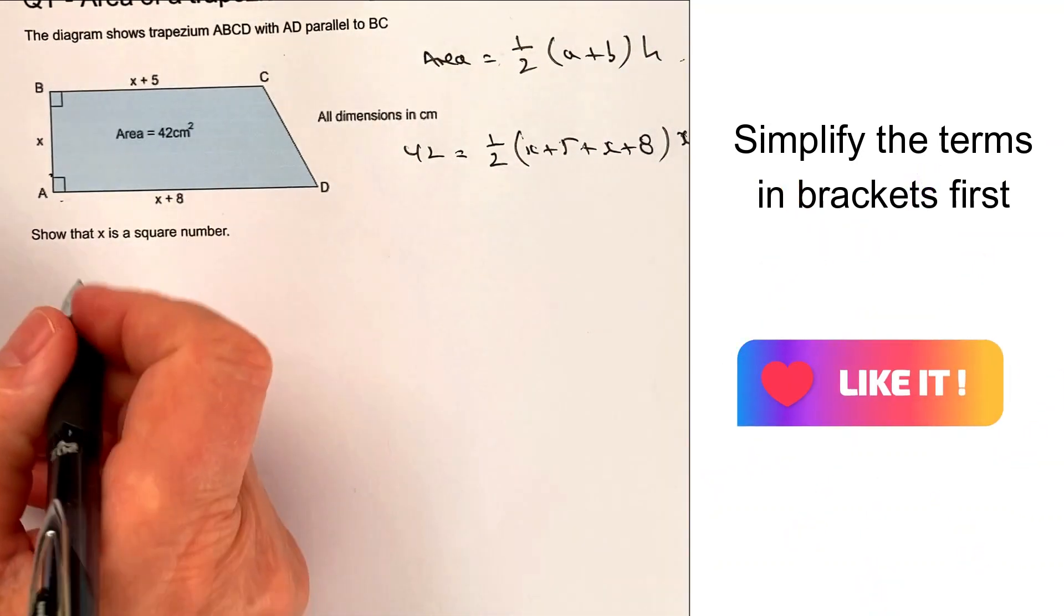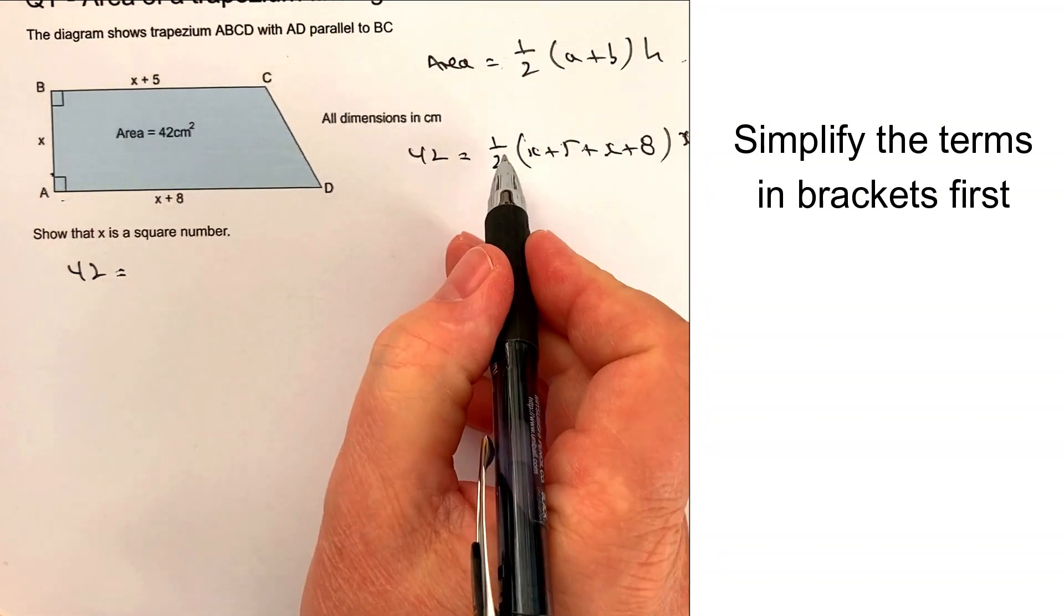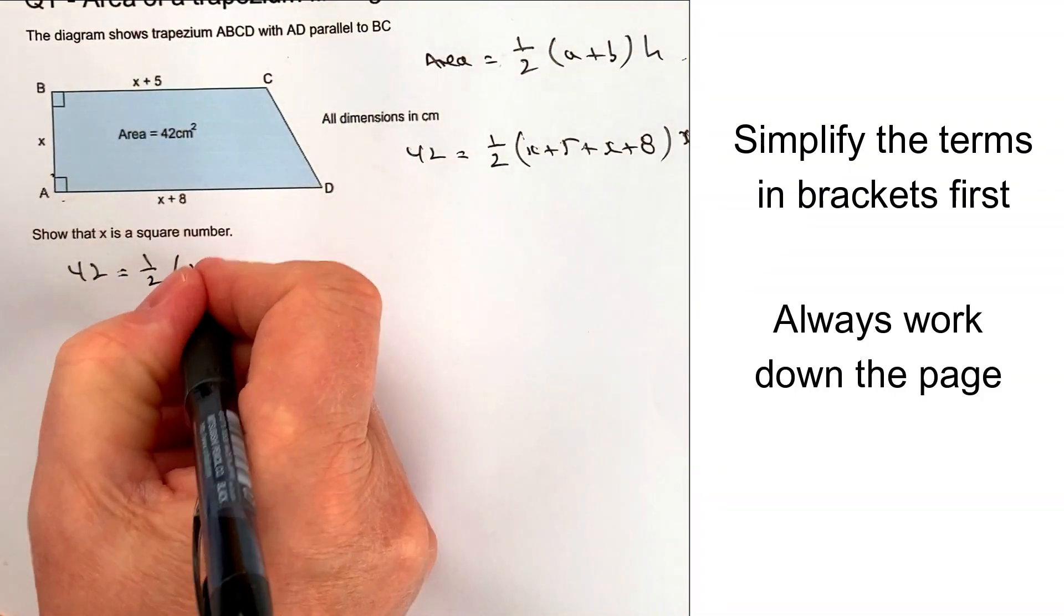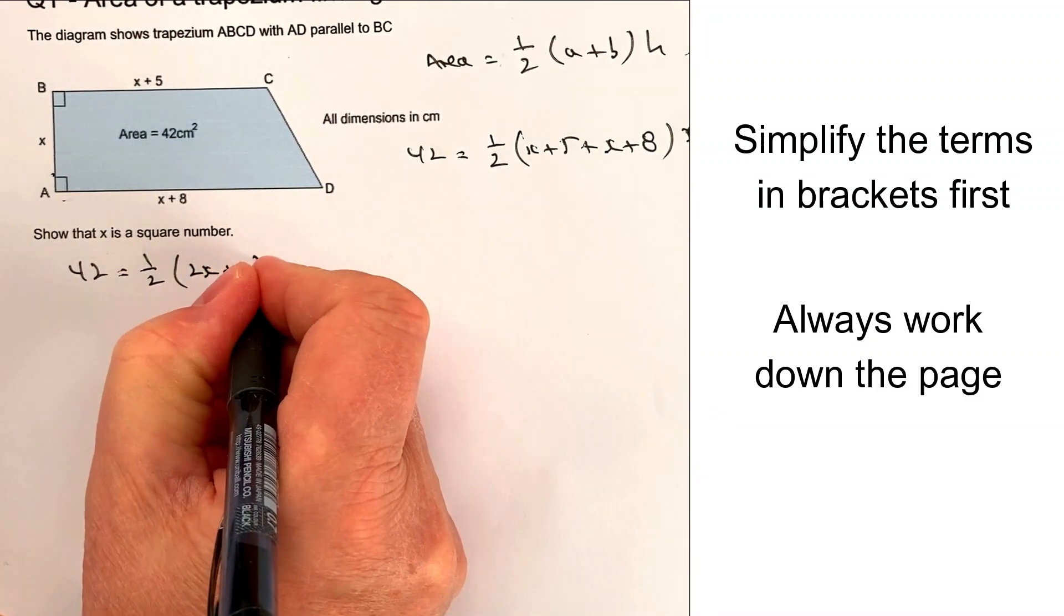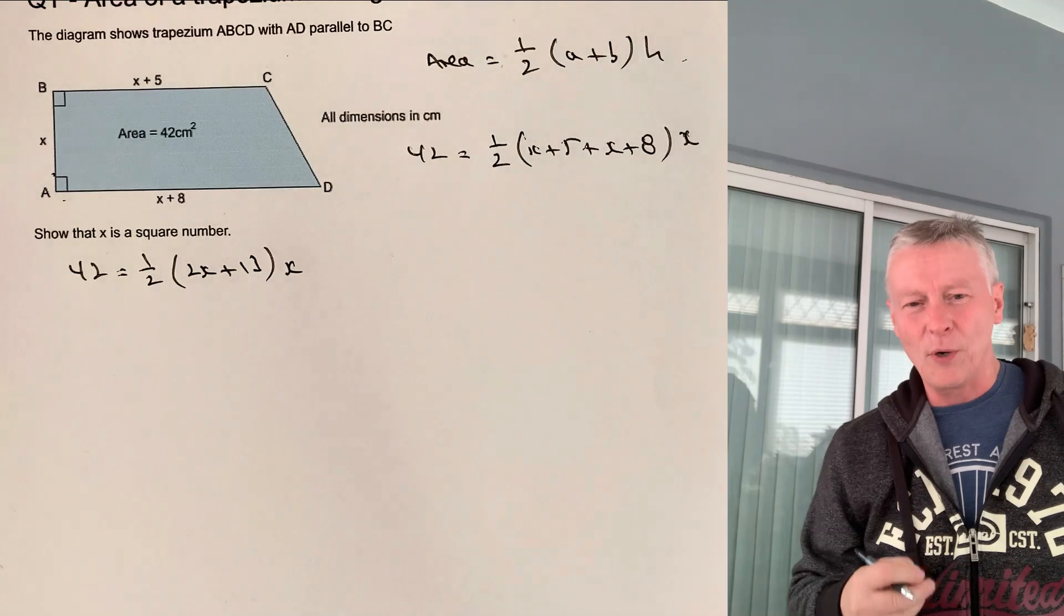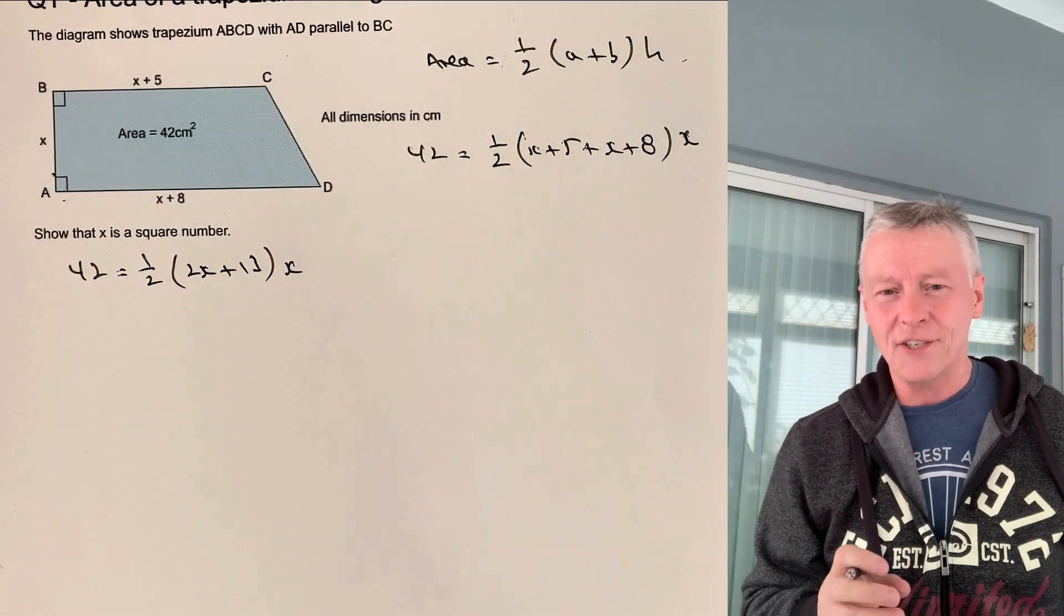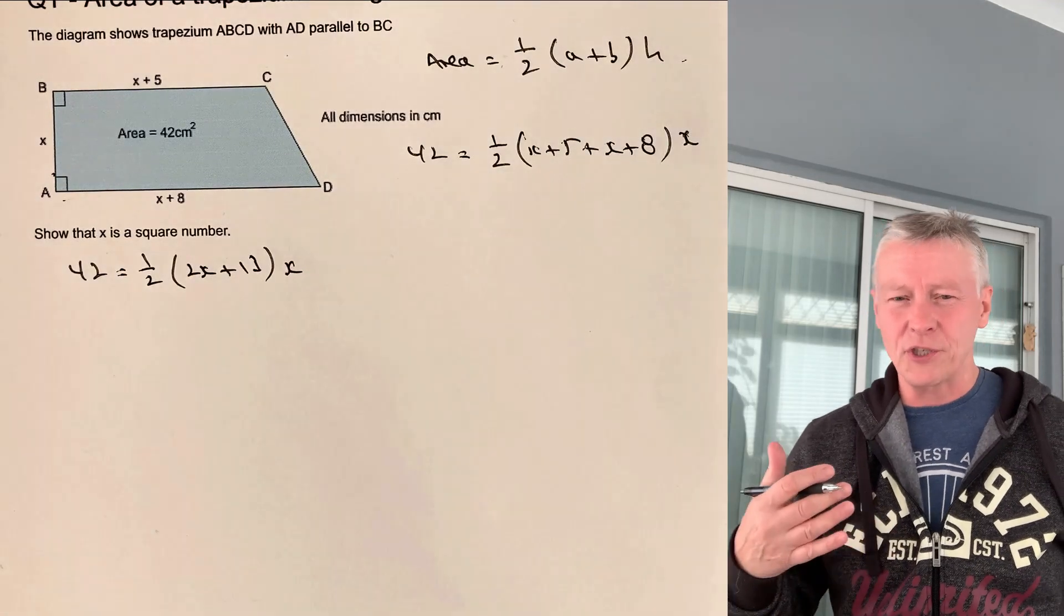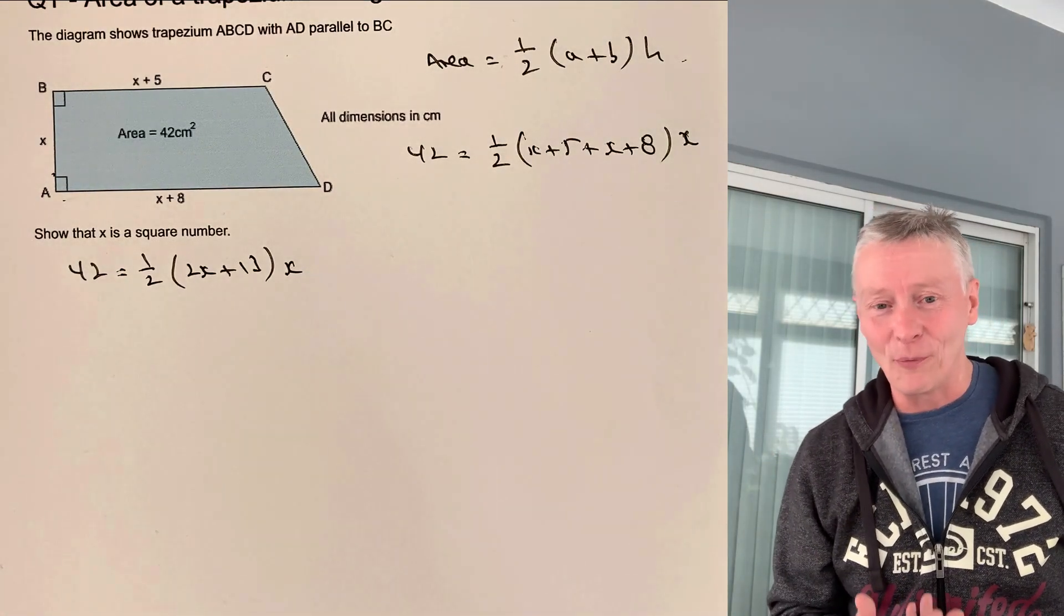Okay, so here we've got 42 equals. Now that's going to be a half multiplied by whatever's in the brackets which is 2x plus 13 and then x at the end there. Now I'd just be a little bit wary about that 13. It's an odd number so it's a little bit difficult to get a half of it. So you might want to just check at this point. It's always worthwhile.